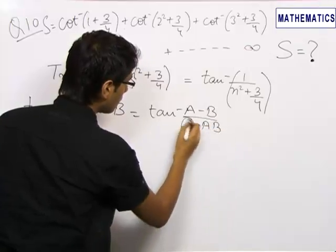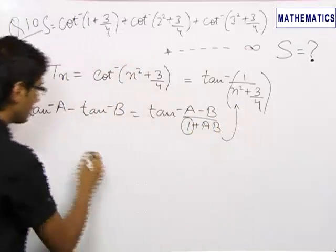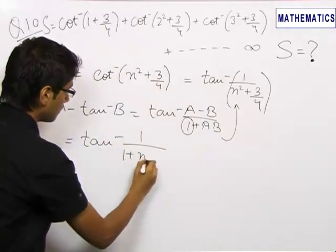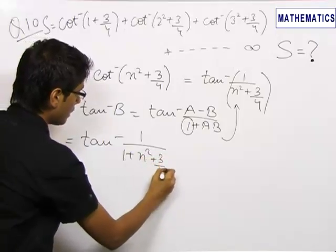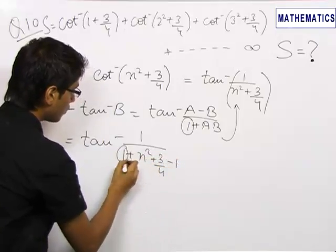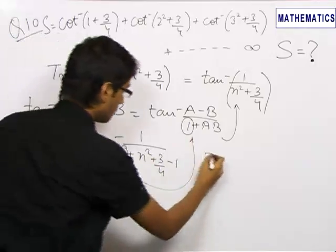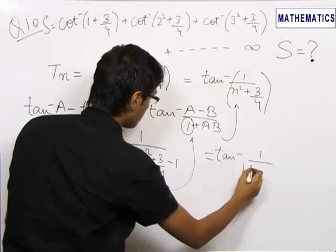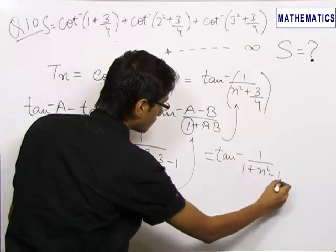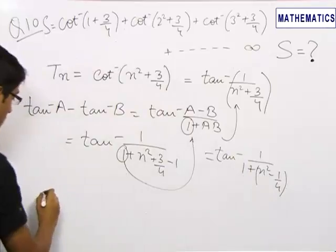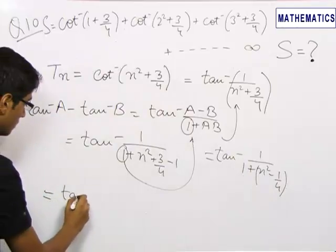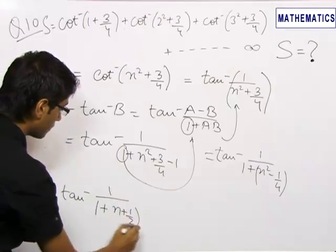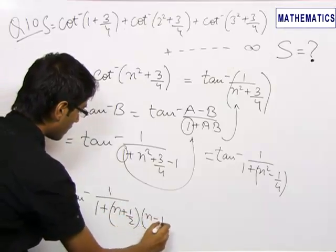We try to create a 1 in the denominator. We add and subtract 1 in the denominator, just to create the 1 term present in the formula. This becomes tan inverse of 1/(1 + n² − 1/4), which becomes tan inverse of 1/(1 + (n + 1/2)(n − 1/2)).